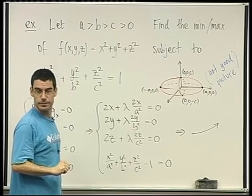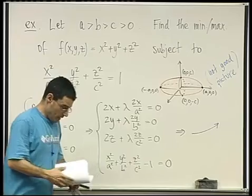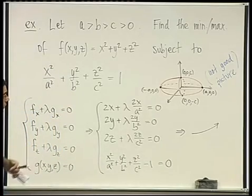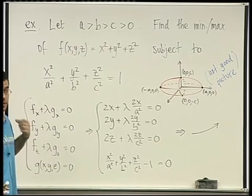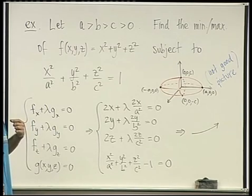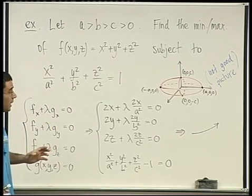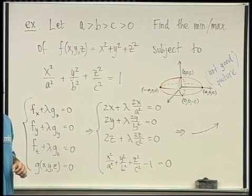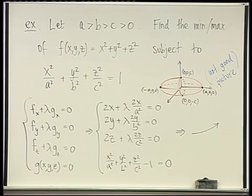What I want to do next is outline the idea of the proof of the theorem on Lagrange multipliers. I'm going to do it for the two-variable case — it's not very difficult, it's kind of neat. That's coming up next.